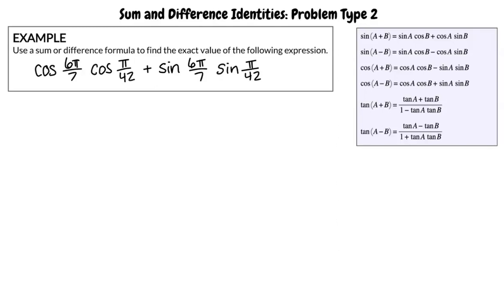Now, if we look at our list of sum and difference formulas, we can see that this expression is of the format cos(A)cos(B) + sin(A)sin(B), where A equals 6π/7 and B equals π/42.